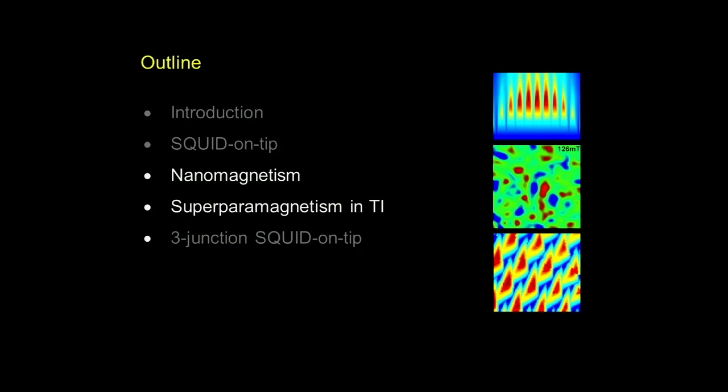All the data I will show you today is obtained by using the signal itself as a measure of the surface, with no active feedback upon scanning. As I mentioned, we do a lot of vortex dynamics, and Yonatan Anahory will tell you tomorrow about some of the things we're doing there. Today I want to show you some things that we're doing with nanomagnetism.